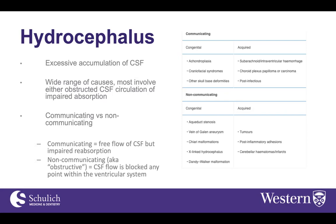Some causes of communicating hydrocephalus include congenital conditions such as achondroplasia and craniofacial syndromes with skull base deformities. Acquired causes include intracranial bleeds and post-infectious conditions — for example, after meningitis, many arachnoid granules can become fibrosed and scarred, leading to impaired CSF reabsorption and ultimately hydrocephalus.